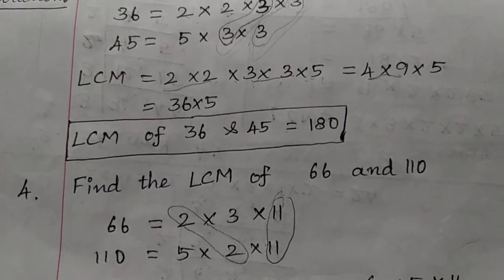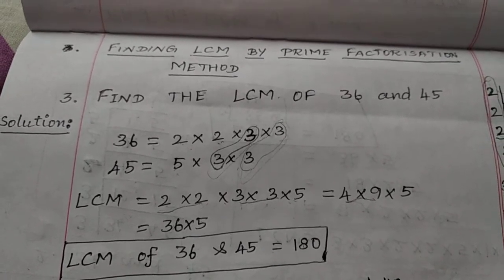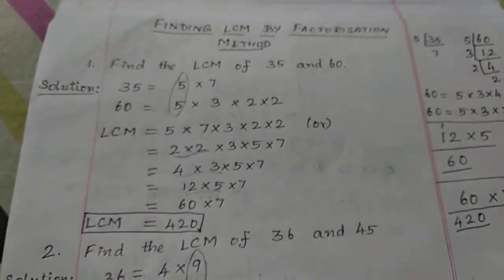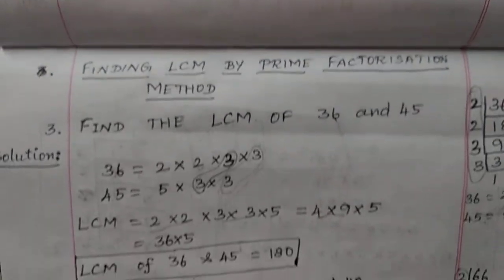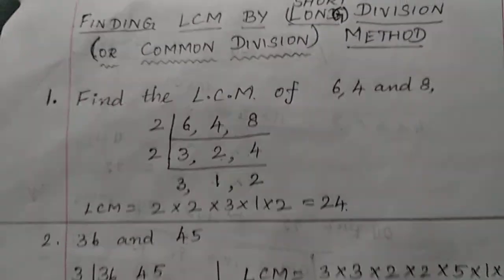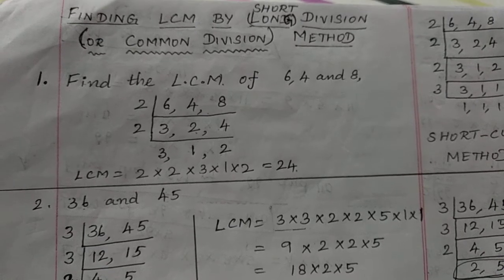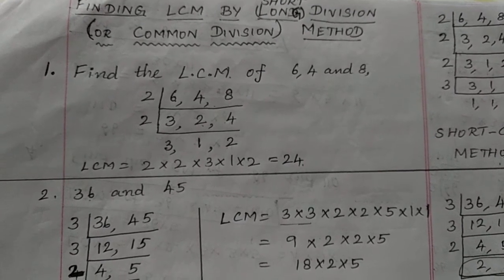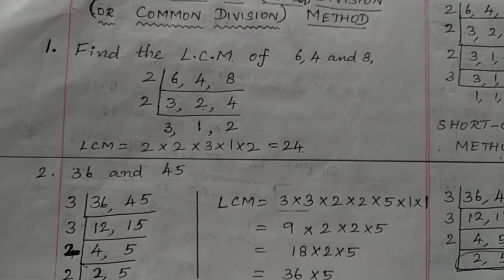You can find the LCM of 2 or more numbers using the common multiples method, factorization method, or prime factorization method. We have one more interesting method to find LCM, called the short division method.